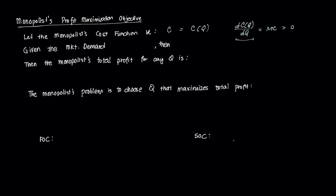From the last video, we know that the market demand is P, which can be expressed as some function of Q. Revenue, then, since we have our market demand, is equal to P times Q — that's P, which is a function of Q, times Q. If the monopolist chooses to set its price rather than its output, we get revenue which is also some function of Q.